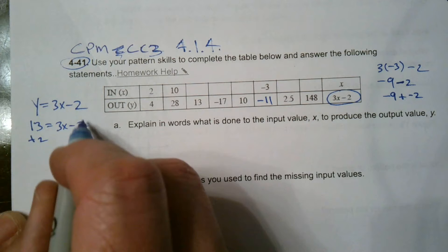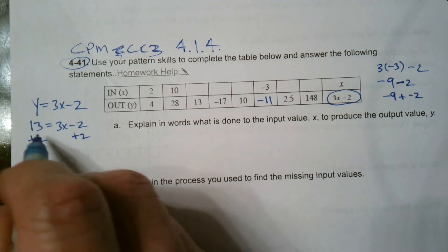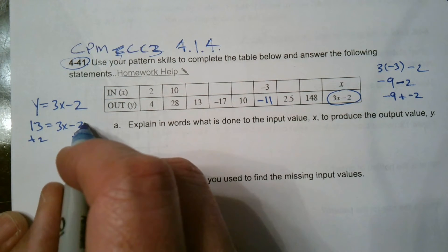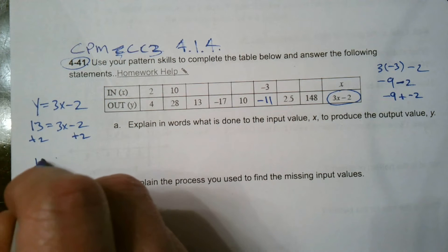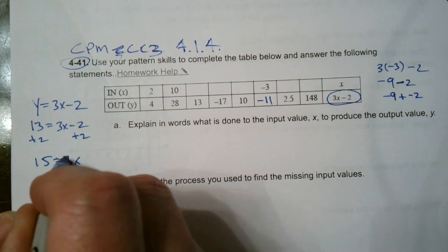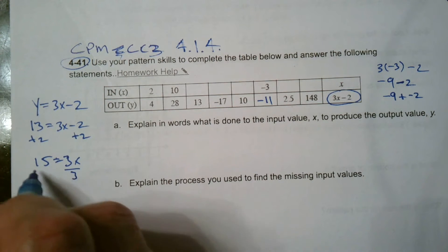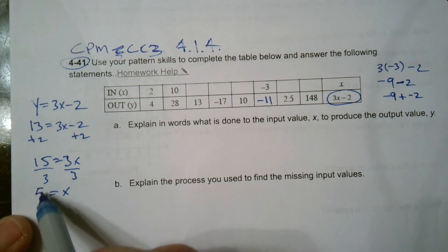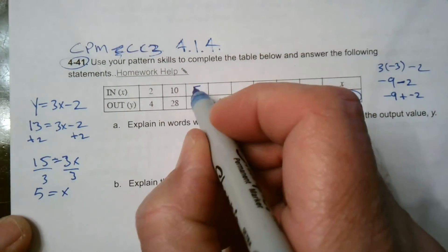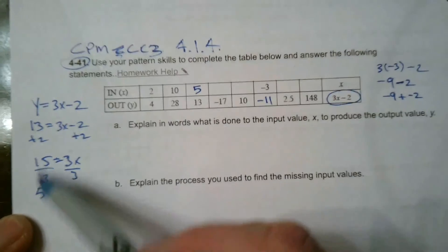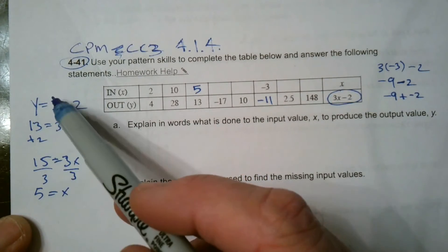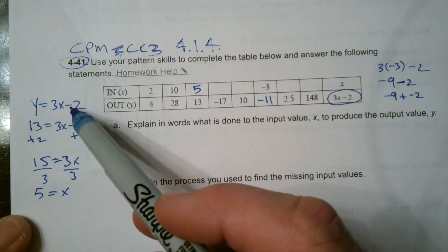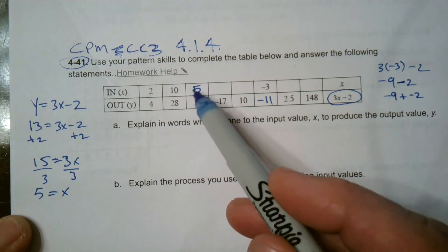So instead of some minus two, I'm going to add two to both sides to get to figure out what my X is. I'm doing the opposites to find out what X is. So now this is 15 is equal to 3X. And then if I divide by three, both sides, I get X is equal to five. So I know now that if X is five, I'd get 13 for Y. So let's check that. So if I go back and put X into here, three times five is 15 minus two is 13. So that's where that works.